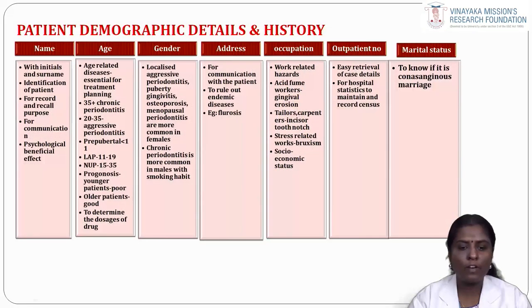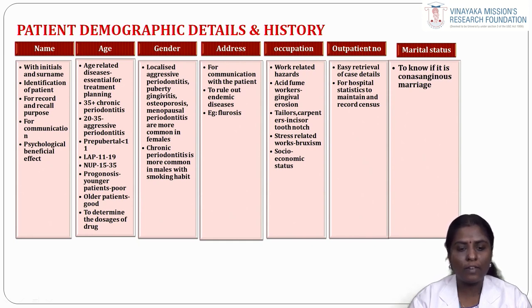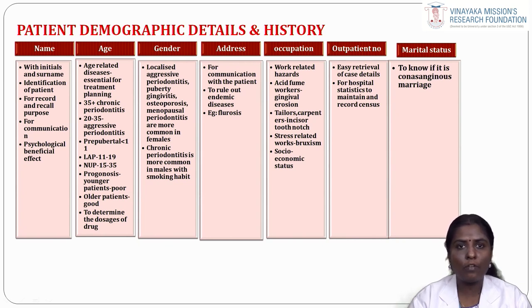Here comes the patient demographic details and history. Name: always write the name of the patient with initials and surname. It is used for identification of the patient, for record and recall purposes, and for communication and psychological benefit. Age: there are certain age-related diseases which are essential for treatment planning. For example, chronic periodontitis is more prevalent in people aged 35 and above. Aggressive periodontitis is commonly seen in people aged 20 to 35 years. Pre-pubertal periodontitis, localized aggressive periodontitis, and necrotizing ulcerative periodontitis are all related to age.